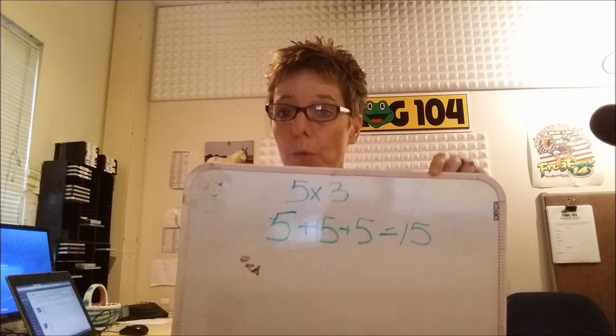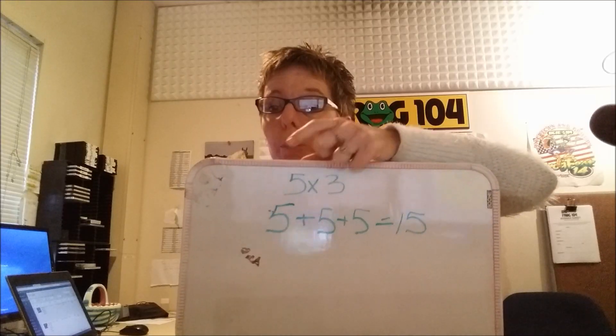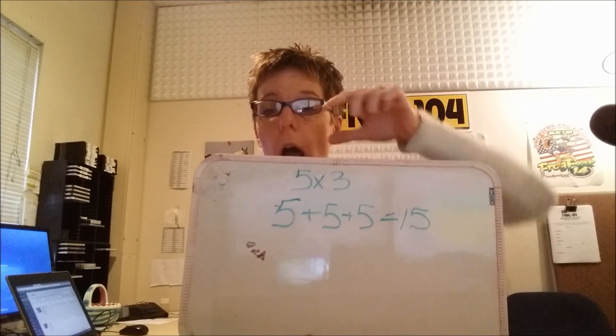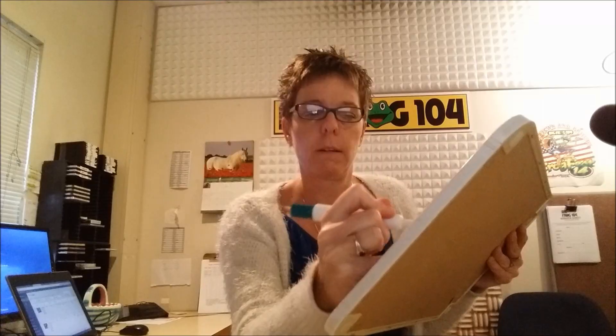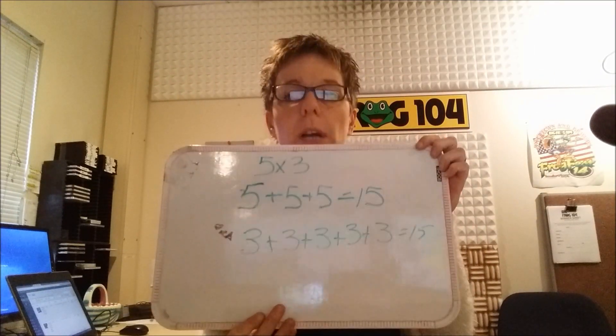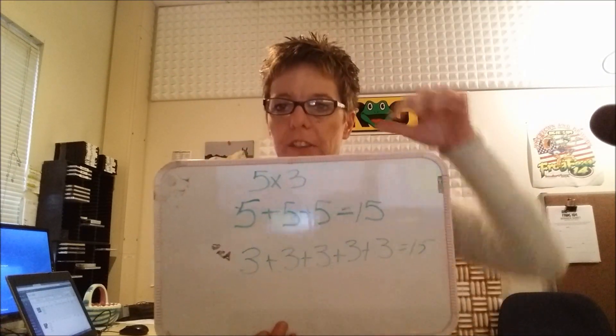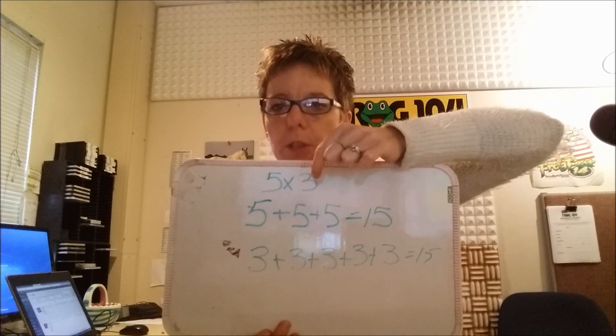Because this is wrong. If it would have said 3 times 5, this answer would have been right. But because the test question read 5 times 3, the student should have written 3+3+3+3+3=15. Because it reads 5 times 3.